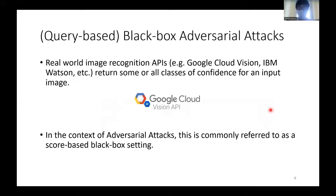In reality, models are rarely white-box, and the models to be attacked are often black-box. For example, there are large image recognition APIs like Google Cloud Vision, IBM Watson, etc., which can return all classes of confidence scores for input images. Therefore, methods that can generate adversarial examples even in a black-box environment are more practical. However, from a practical point of view, it is considered that the attacker often does not know the internal information of the model. In the context of adversarial attacks, this is commonly referred to as a score-based black-box setting.